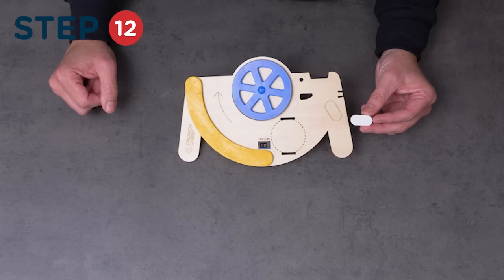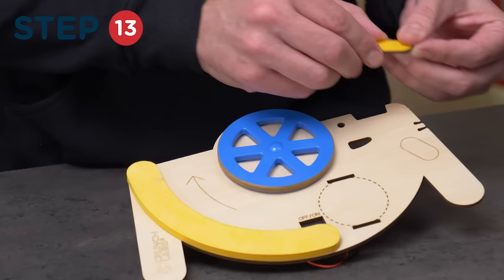Now, find the small yellow wood piece. Then, peel and stick it to the matching shape on the wood launcher.